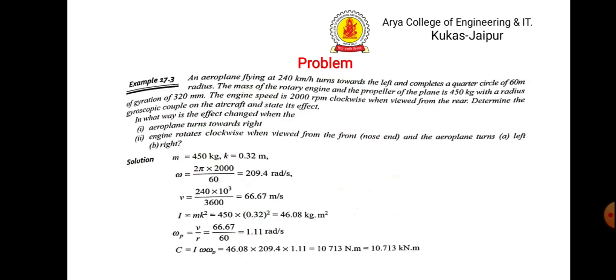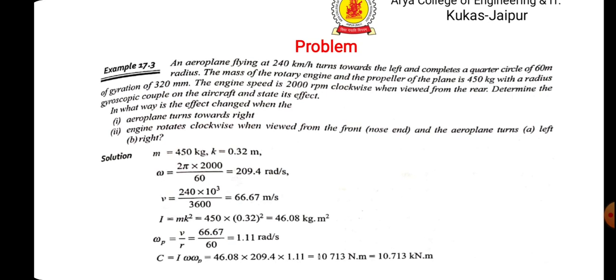Now, if we see the numerical, then it is given that an aeroplane, the mass is given, speed is given. So, omega is 2 pi n by 60. Velocity is given 240 into 10 to power 3 upon 3600 meter per second. Radius of gyration is given. So, I is mk square and we know omega is V upon R.